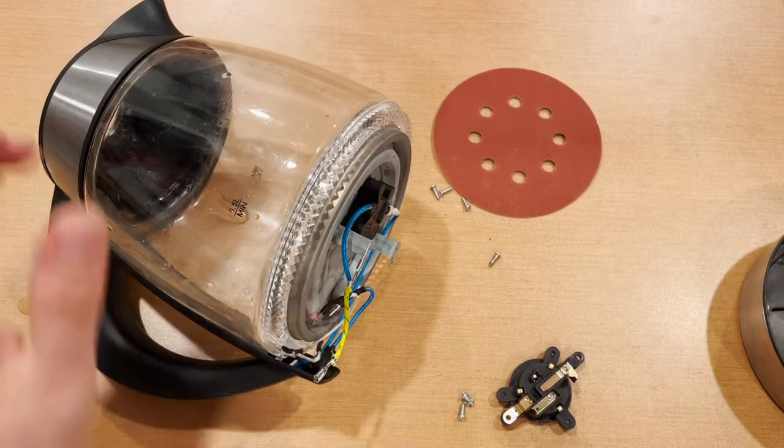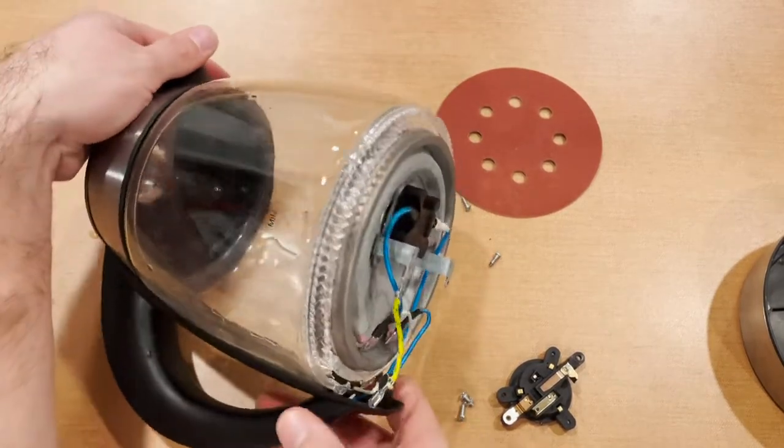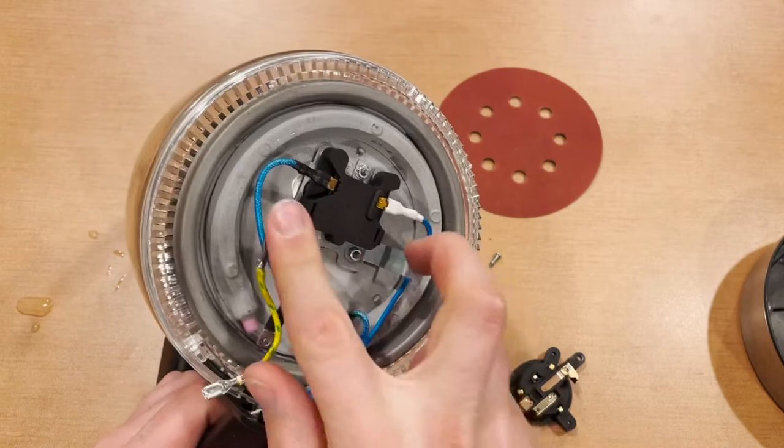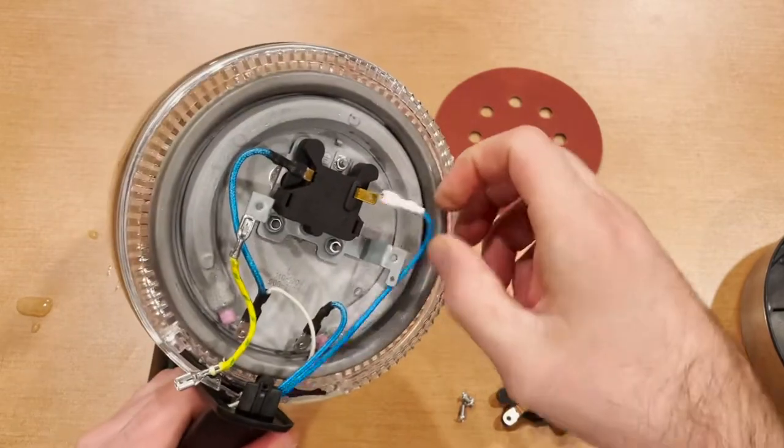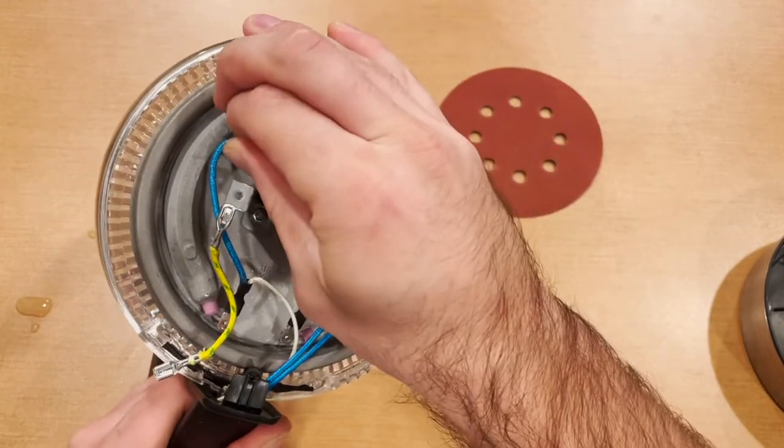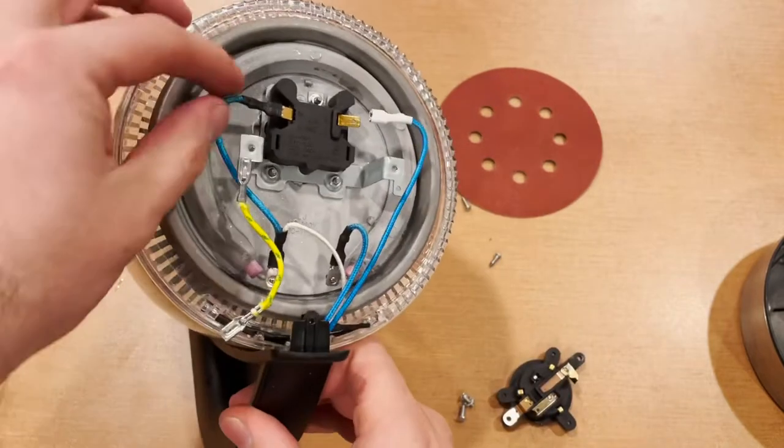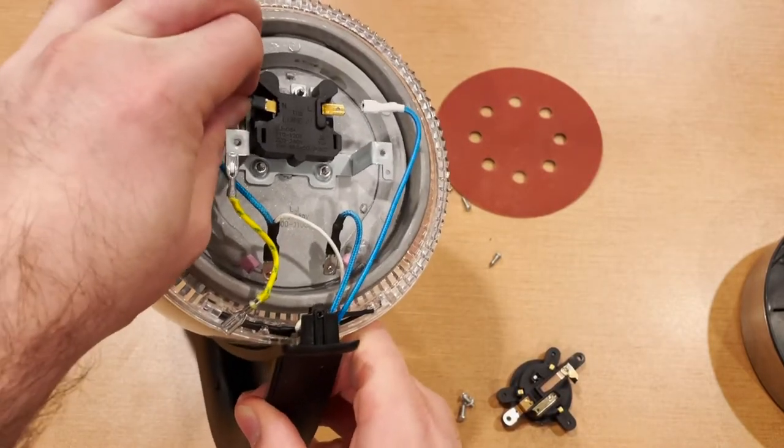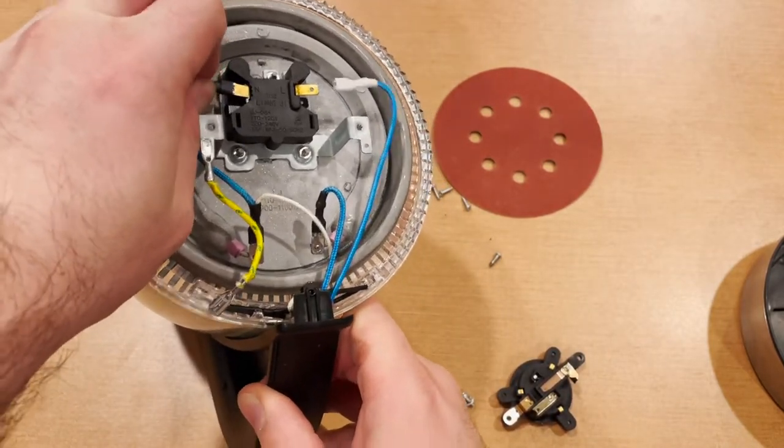So our next step is going to be to take off this whole bracket. First we're going to go ahead and unplug both of these, just remember what side they do go on so when we go to put them on there, they're going back in the same place.